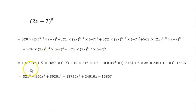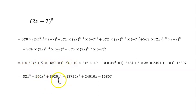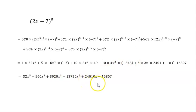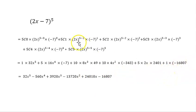Multiplying everything together and keeping the plus and minus signs, the final expanded answer is: 32x^5 − 560x^4 + 3920x^3 − 13720x^2 + 24010x − 16807.